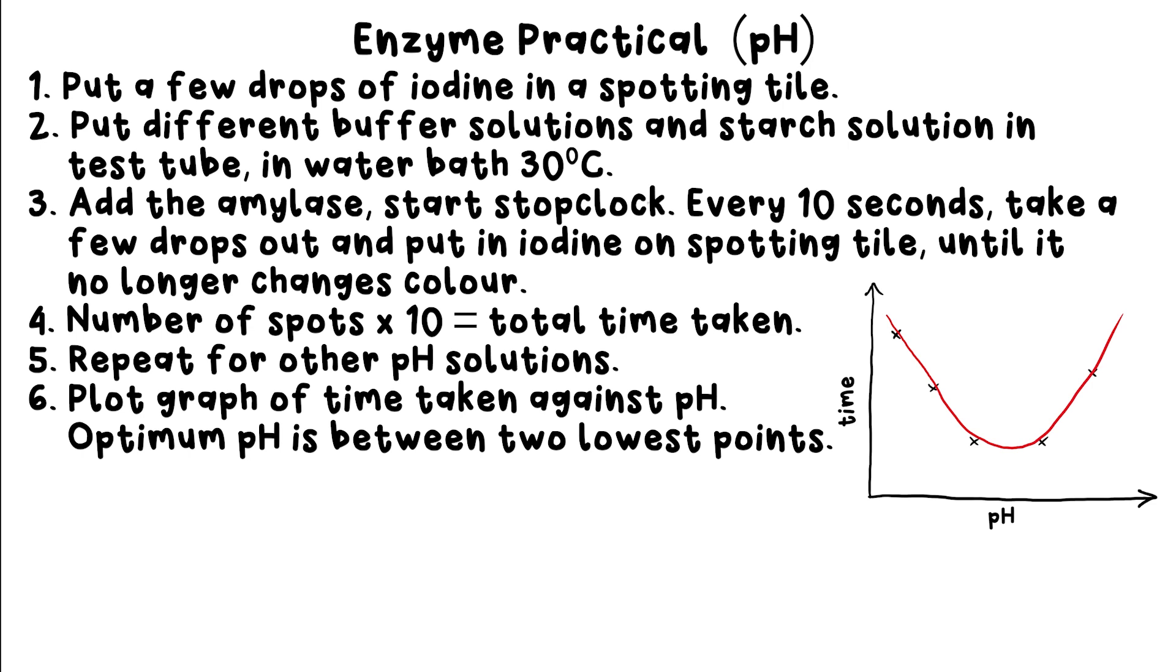You should end up with a curve. The bottom of the curve is at the pH that would have resulted in the shortest time for the starch to be broken down. In other words, the fastest rate of reaction. That could be the optimum pH, but because we can't be sure of what the curve actually looks like, we just say it lies between two of our pHs.